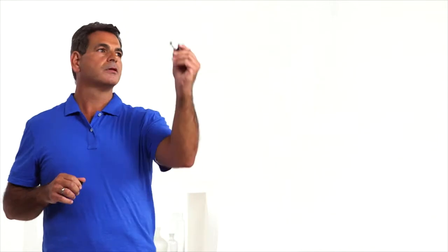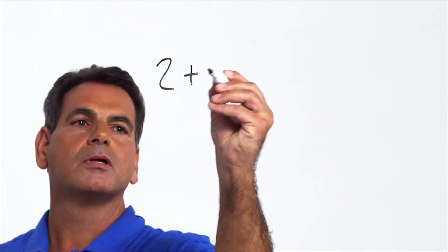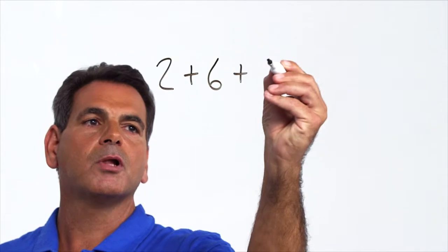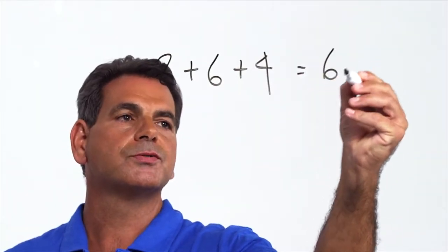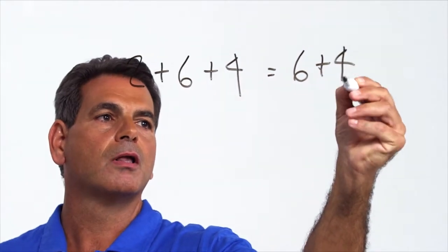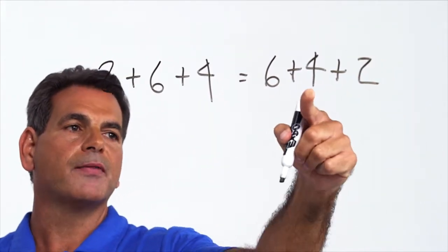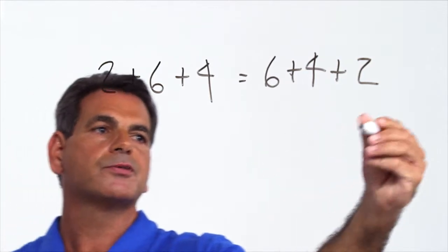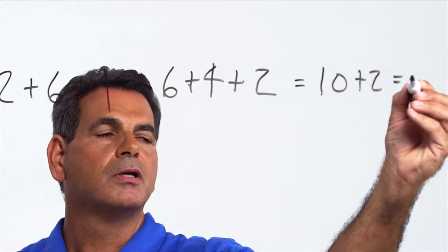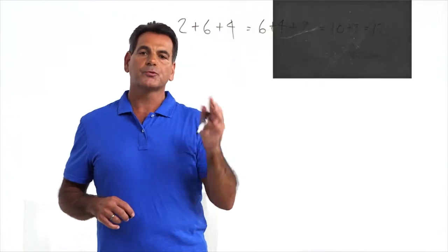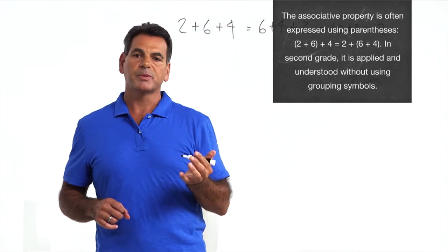Let's look at some mental math strategies students can use for addition and subtraction within twenty. Let's start with the associative property. Two plus six plus four can be rearranged to become six plus four plus two. This is a number bond that students have learned already, so this quickly becomes recognized as ten plus two equals twelve. The associative property allows students to rearrange numbers so addition problems become easier.